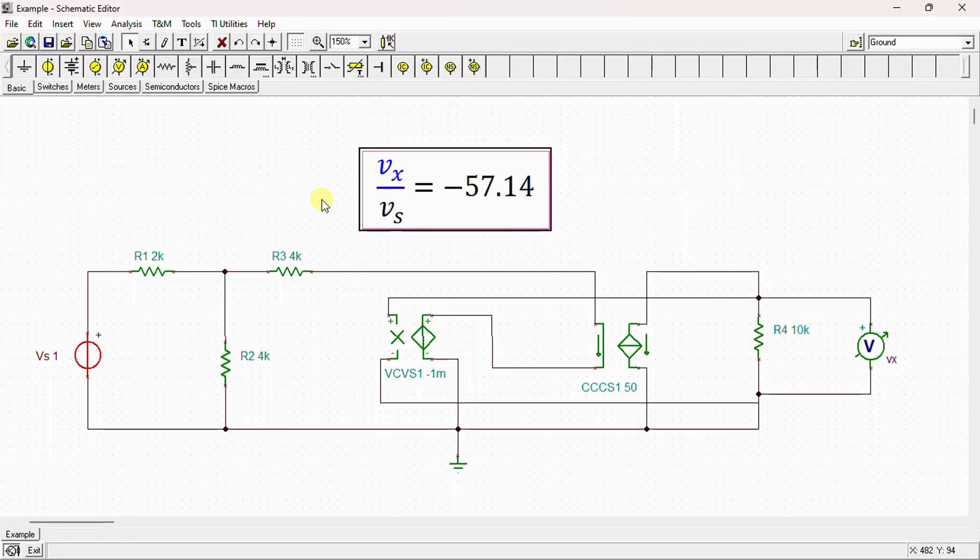Here is our network drawn in SPICE simulator. We can see here that this is the independent voltage source Vs, resistor R1, R2, R3 and R4. And we have here the voltage controlled voltage source and the current controlled current source.